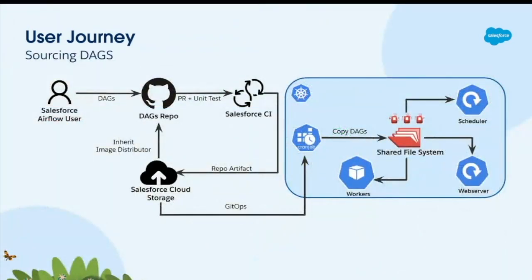Let's take a deeper look at how the DAG sourcing process works. Airflow users write their DAGs, commit them to Git repositories, which flow through our CI system that does checks and validations. Eventually the DAG repo lands in cloud storage. We built GitHub-style jobs that poll cloud storage for updates to DAG repos, and every time there's an update, they pull in the latest copy of the DAGs and persist them on the shared file system. This way, a consistent view of the latest DAGs is available to all components — the scheduler, web server, and worker pods.